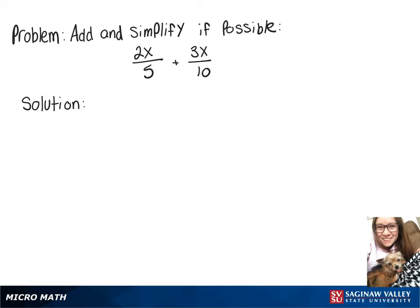We're going to do 2x over 5 plus 3x over 10. To do that, we have to have a common denominator. So we're going to take our 2x over 5 and multiply it by 2 over 2, and that'll give us the equivalent fraction of 4x over 10.